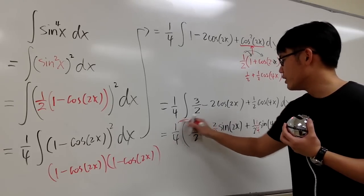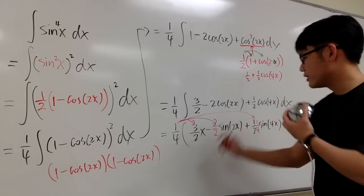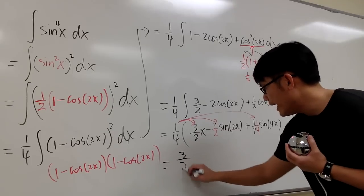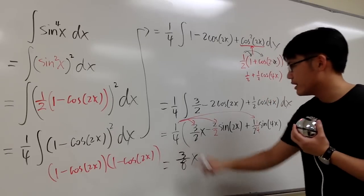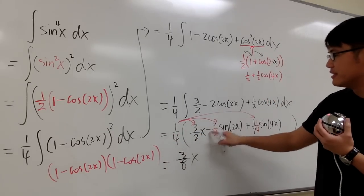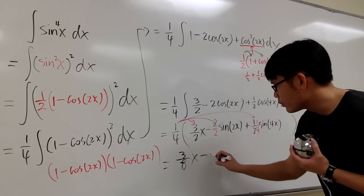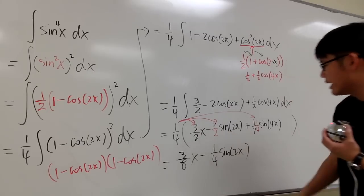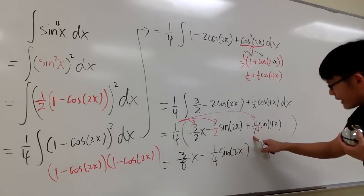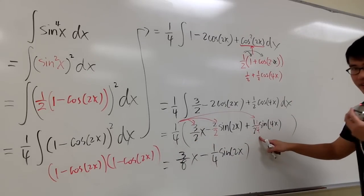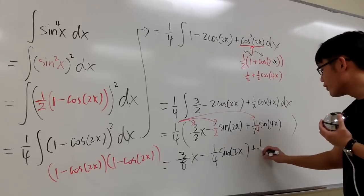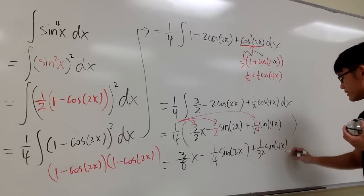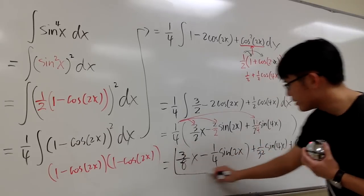Let's distribute the 1 over 4 into the parentheses for the final answer. 1 over 4 times 3 over 2x is 3 over 8x. Then 1 over 4 times negative 1 gives minus 1 over 4 sine of 2x. And 1 over 4 times one-half times one-fourth gives plus 1 over 32 sine of 4x. So the final answer is 3x/8 minus (1/4)sin(2x) plus (1/32)sin(4x) plus C.